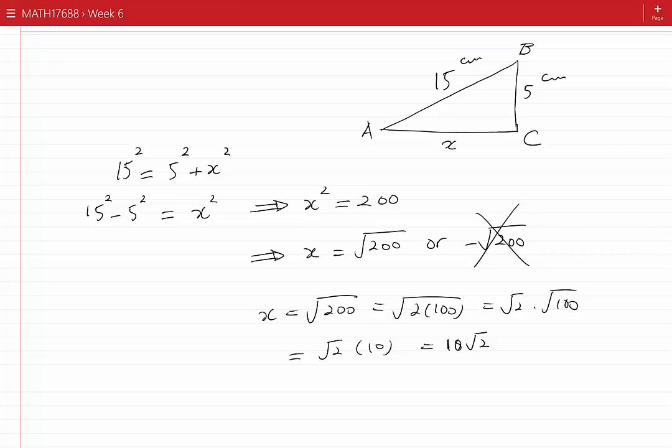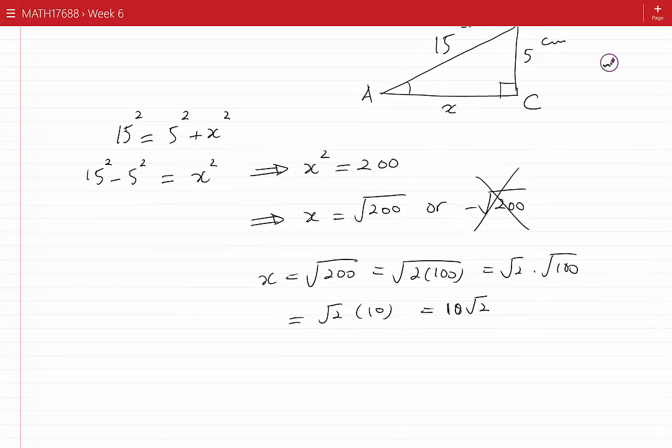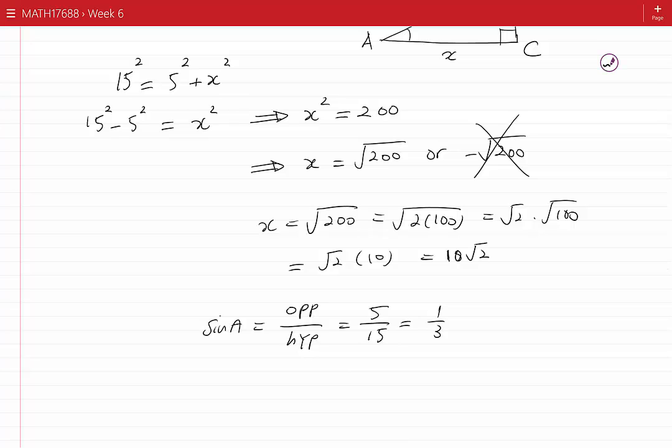Now I would try to find the angle A by knowing the sides of the triangle. Sine of A is opposite over hypotenuse, that would be 5 over 15, which is 1 by 3. If we use our calculator, we see that A is sine inverse of 1/3, and that turns out to be approximately 19.47 degrees.